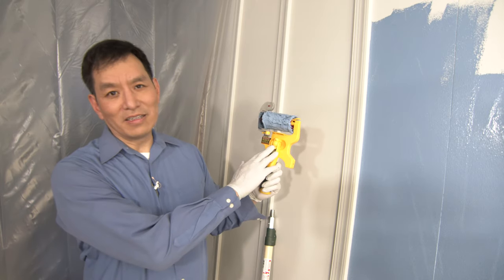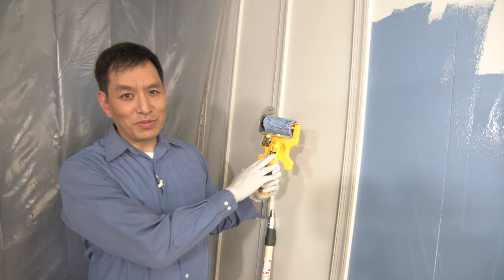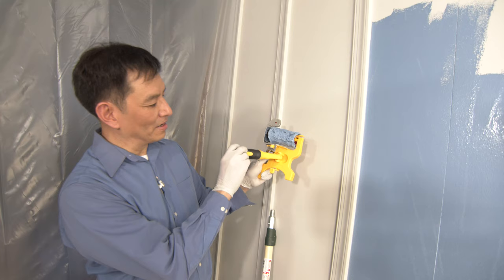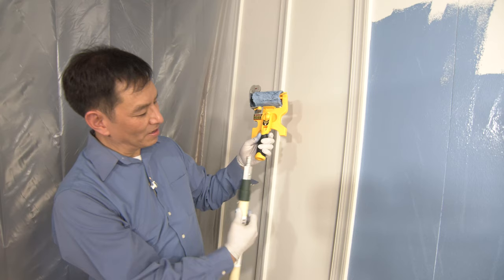This model here is the Acubrush XT pole mountable version, and the difference between this version and the MX is that it has a swivel handle here which is also threaded, and that allows you to put this unit onto any standard threaded paint pole like the one I've got here.